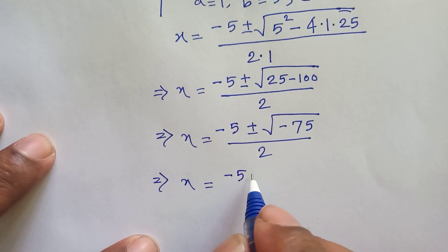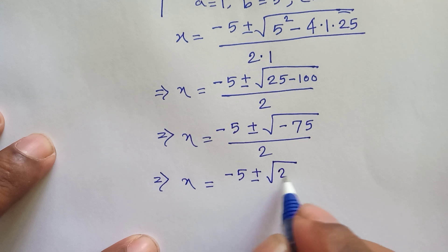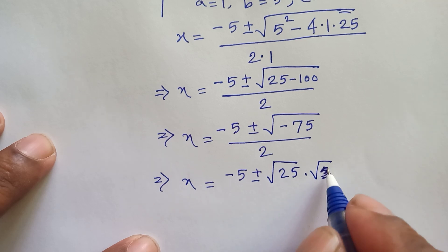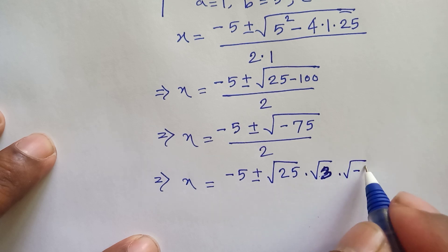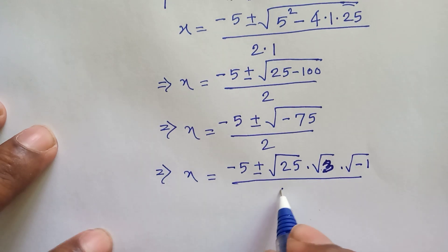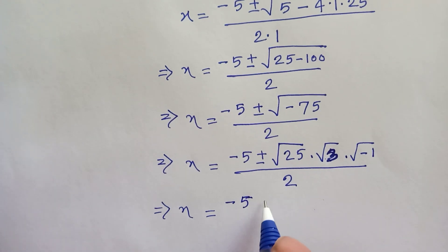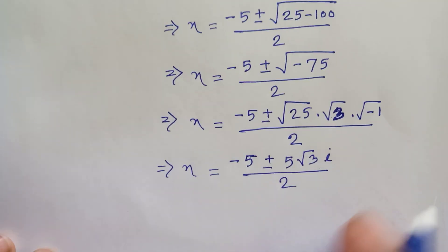This can be written as x equals negative 5 plus or minus the square root of 25 times 3 times negative 1, which simplifies to x equals negative 5 plus or minus 5i√3 over 2.